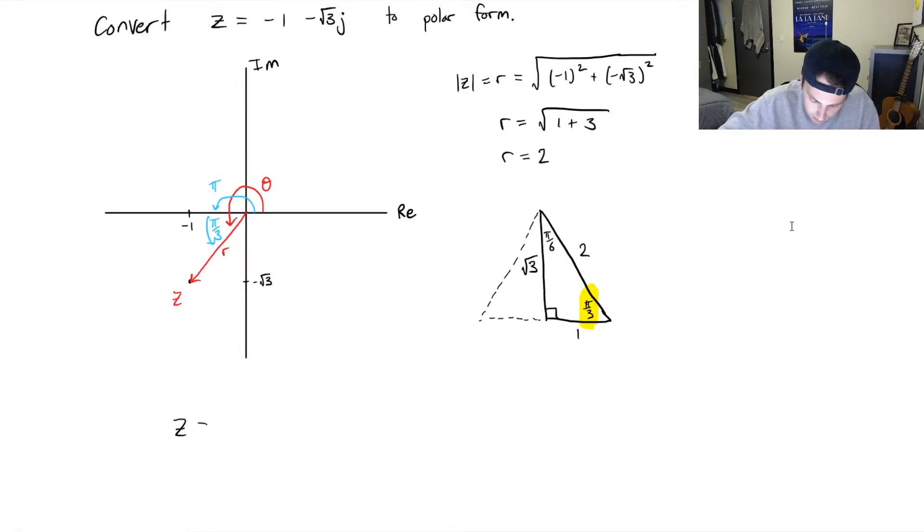Z is equal to... remember, polar form, we have r. So that is 2 times cosine of the argument, and that's 4π over 3, plus j sine of the argument, 4π over 3. Remember, the angles are the same in the cosine and the sine. Just make sure that you're expressing what angle it is in the proper quadrant. That's going to give us our proper negative or positive value for the standard form if you were to convert it back. This is your final answer for the polar form of z.